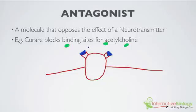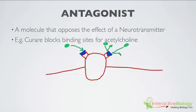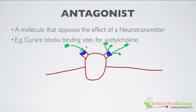So acetylcholine wants to bind and wants to cause that channel to open, but it's being blocked so that it cannot bind, and it cannot open the channel for sodium to come in. This would be an example of what curare does. It's an antagonist. In fact, curare can cause muscles to become paralyzed because they cannot be activated and sodium cannot rush into the cell, exciting the cell and exciting the muscle to contract. So that can be a serious thing if you have curare binding to these receptor sites.